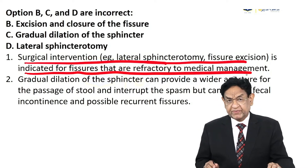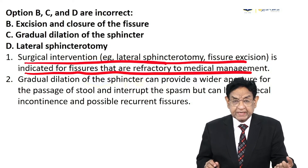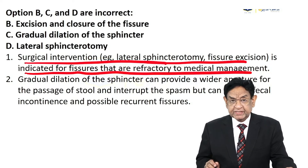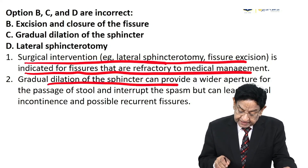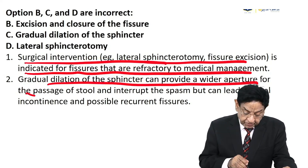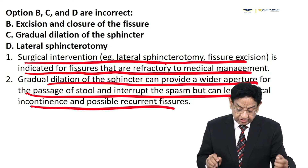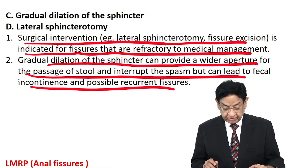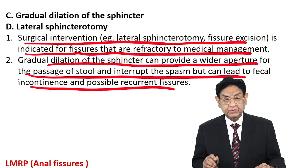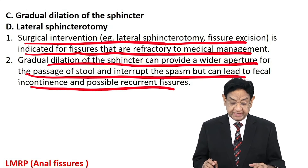Surgical interventions such as lateral sphincterotomy or fissure excision are indicated only for fissures refractory to medical therapy — surgery is never the first option. Gradual dilatation of the sphincter can provide a wider aperture for stool passage and interrupt spasm, but can lead to fecal incontinence and possible recurrent fissure, so this decision must be taken very carefully.